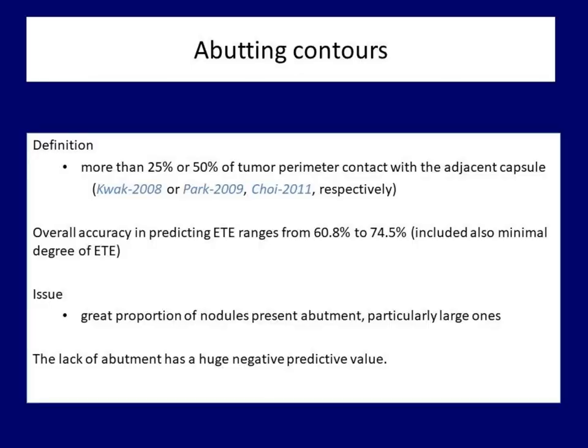The second sign is the abutting contour. It means that the nodule is in close contact with the outer surface of the lobe. The issue is that a nodule located at the edge of the thyroid is a very common phenomenon. Therefore, we speak about abutment if it exceeds a certain value. The perimeter of the abutting part of the nodule has to be compared to the perimeter of the entire nodule. There is no universally accepted degree of abutment which should be held as pathological. It seems self-evident that the higher the ratio of the perimeter in contact with the adjacent capsule, the higher the likelihood of extra-thyroidal spread. The overall accuracy of abutment is far from ideal.